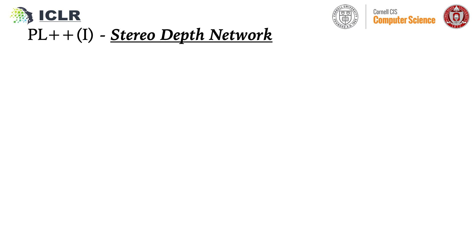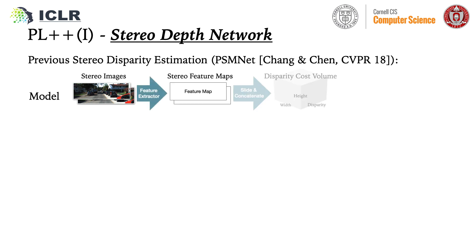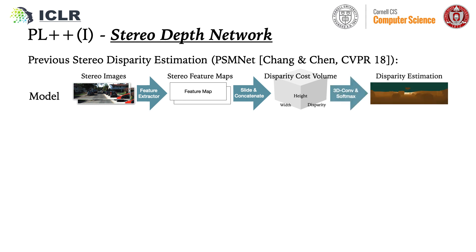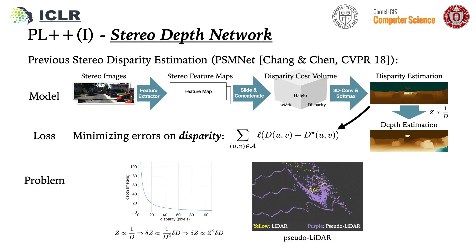To describe the first contribution, we need to look at the architecture of disparity estimation networks. This will typically take a pair of stereo images, use some feature extractor to extract a pair of feature maps, then slide one against the other by different disparity values to create a 4D disparity cost volume, and finally apply 3D convolution and softmax to obtain a disparity estimation. We convert the disparity map to a depth map to create Sudolidar. The loss used to train such a network is the error in disparity.